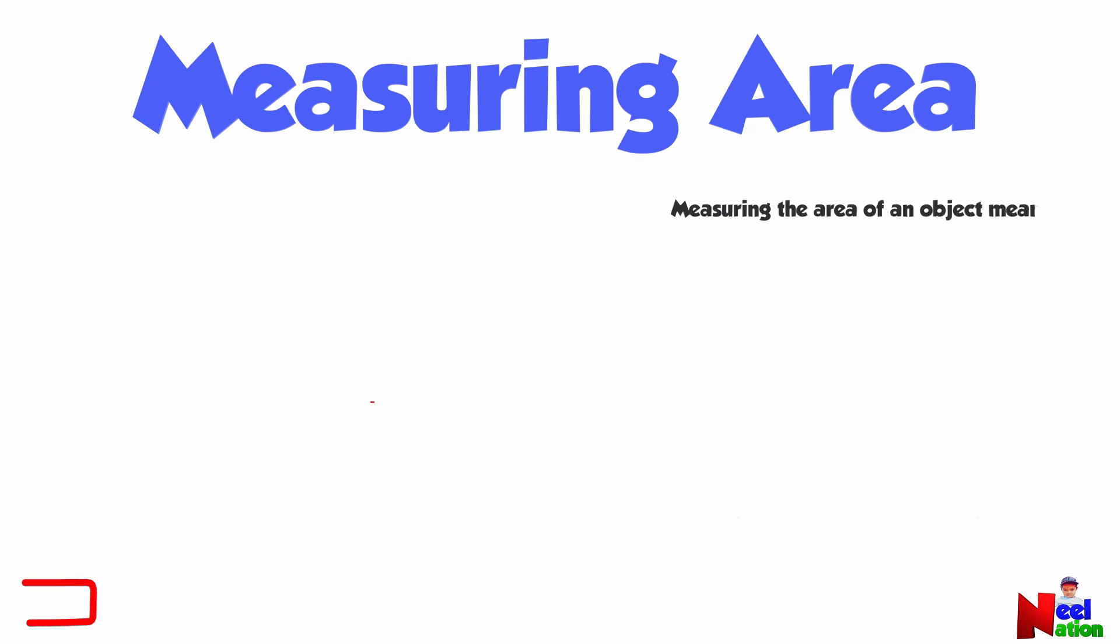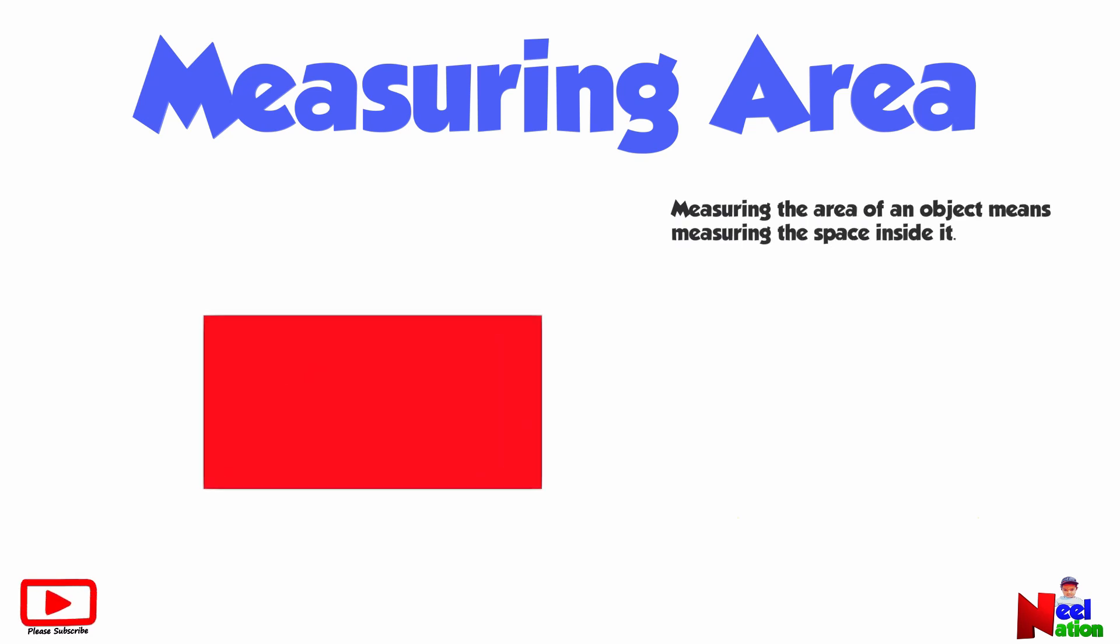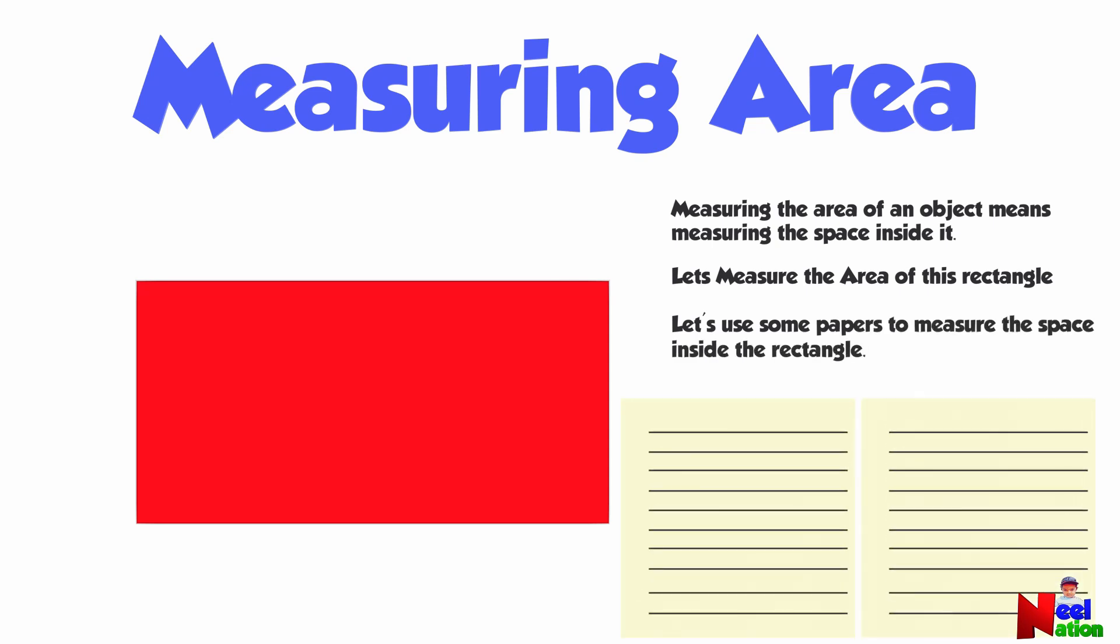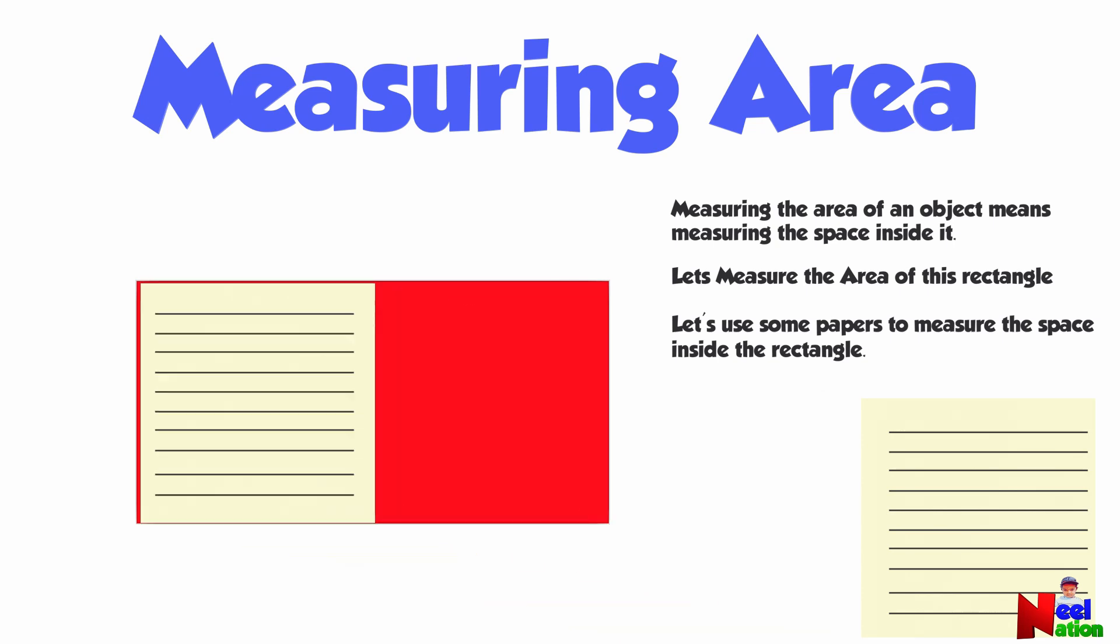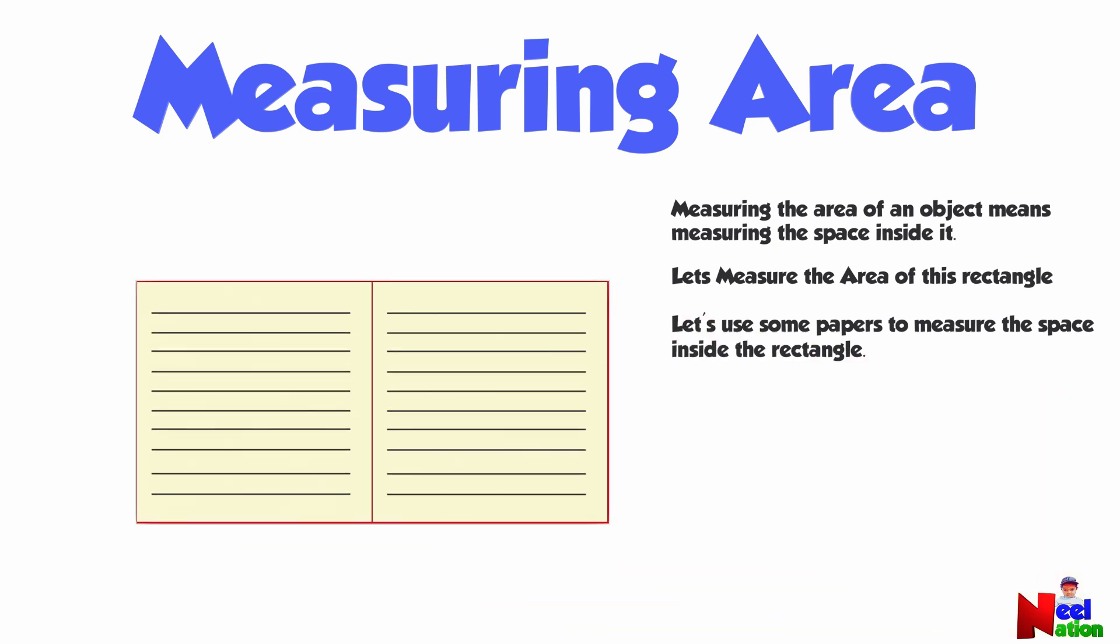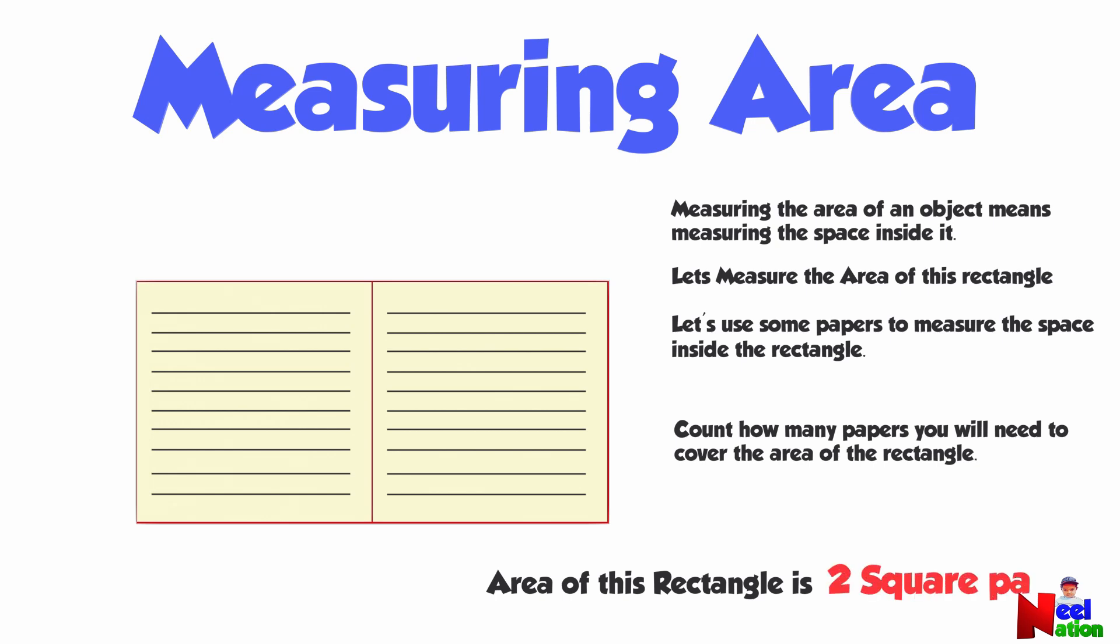Measuring the area of an object means measuring the space inside it. Let's measure the area of this rectangle. Let's use some paper to measure the space inside the rectangle. Count how many papers you will need to cover the area of this rectangle. Area of this rectangle is two square papers.